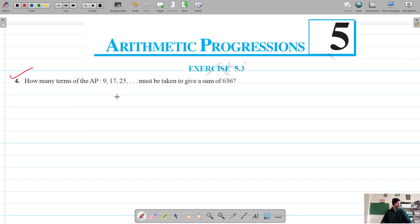All right, so for question number four, we have to find the number of terms of this AP that must be taken to give a sum of 636. So for this AP, first term is 9 and common difference is 17 minus 9 equals 8, and this is the sum.